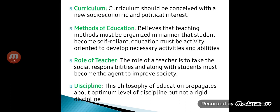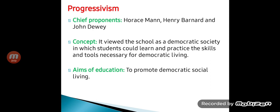The role of a teacher in reconstructionism is to take on social responsibilities and, along with students, become an agent to improve society — not just guiding students but working alongside them to bring change. Discipline here promotes an optimum level of discipline, not rigid discipline. Next is progressivism, whose chief proponents are Horace Mann, Henry Barnard, and John Dewey.